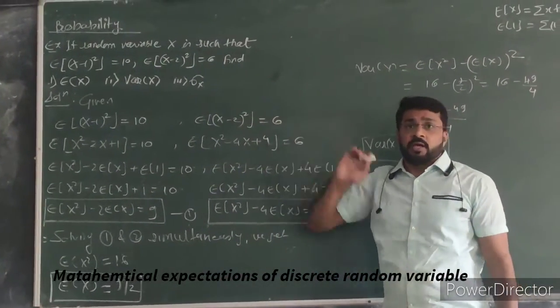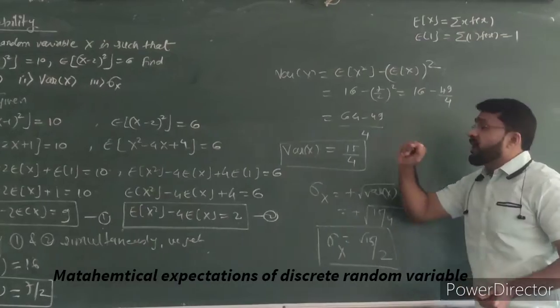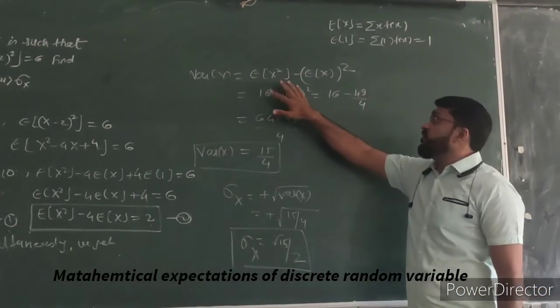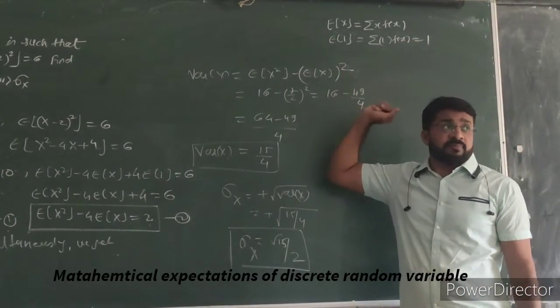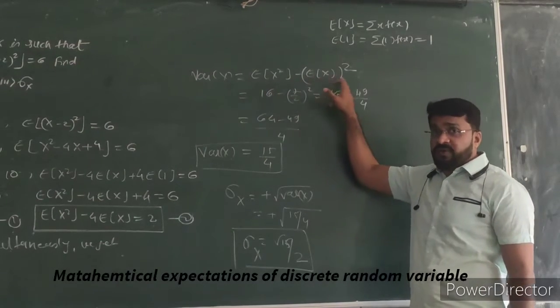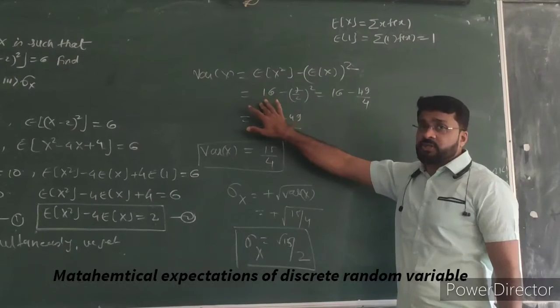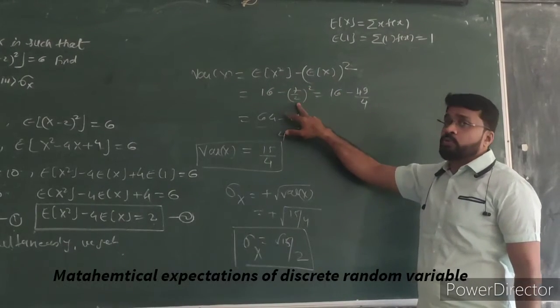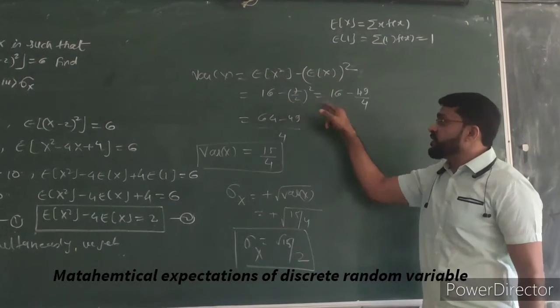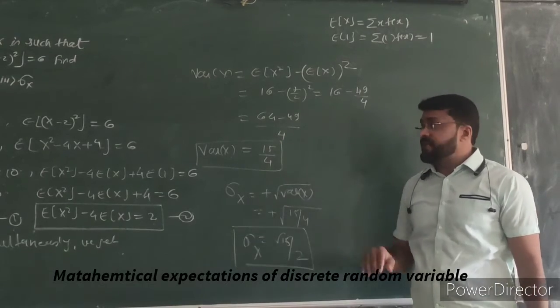Now after that, it is asked to find out the variance of X. We will not find it by the definition. We will have a relation between E(X²) and E(X). So variance is given by E(X²) minus [E(X)]². We have both the values: E(X²) as 16 and E(X) is 7/2 squared. Simplify this to get the value of 15/4. That is the variance of X.